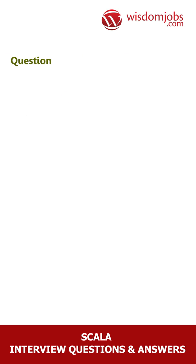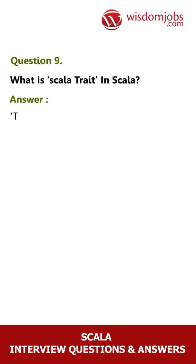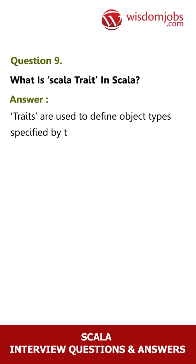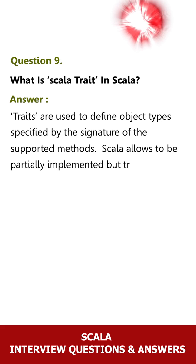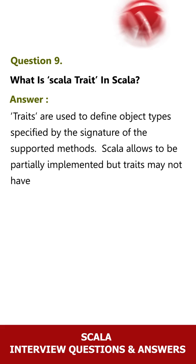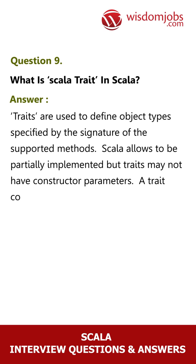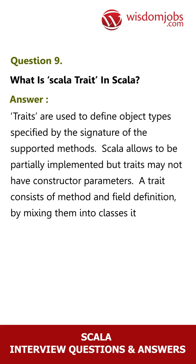Question 9: What is a Scala Trait? Answer: Traits are used to define object types specified by the signature of the supported methods. Scala allows traits to be partially implemented, but traits may not have constructor parameters. A trait consists of method and field definitions. By mixing them into classes, they can be reused.